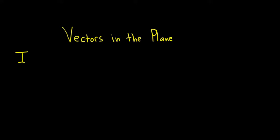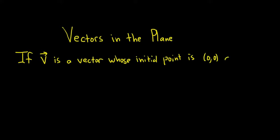So if v, and usually when you write vectors, you're supposed to put a little line here. Sometimes I'll put the arrow, sometimes I won't, but it's supposed to be there. So if v is a vector whose initial point is (0,0), so the origin, and terminal point is, say, parentheses v sub 1 comma v sub 2.